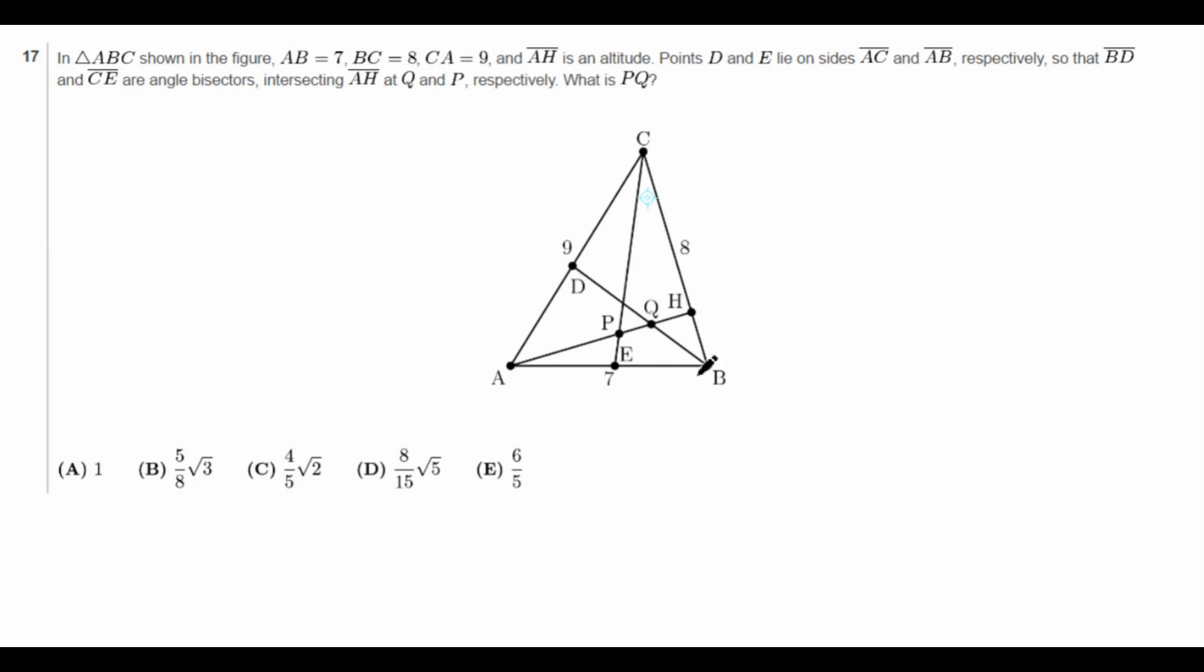What we're given in the problem is that AH is an altitude, so that means angle AHB is a right angle. In addition, angle ABC is bisected by BD, and so is angle ACB bisected by EC. So we know that these two angles are equal, if this is right, and these two angles are equal.